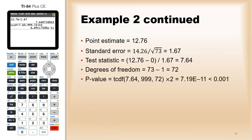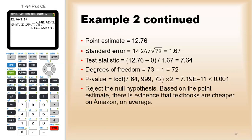So, the degrees of freedom is 72, p-value is less than .001. So, we would reject the null hypothesis. Based on the point estimate, there is evidence that the textbooks are cheaper on Amazon, on average.